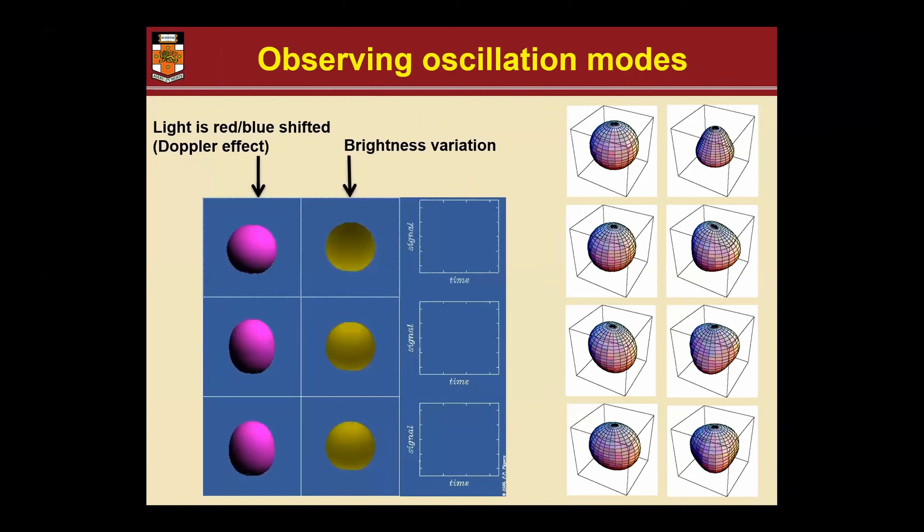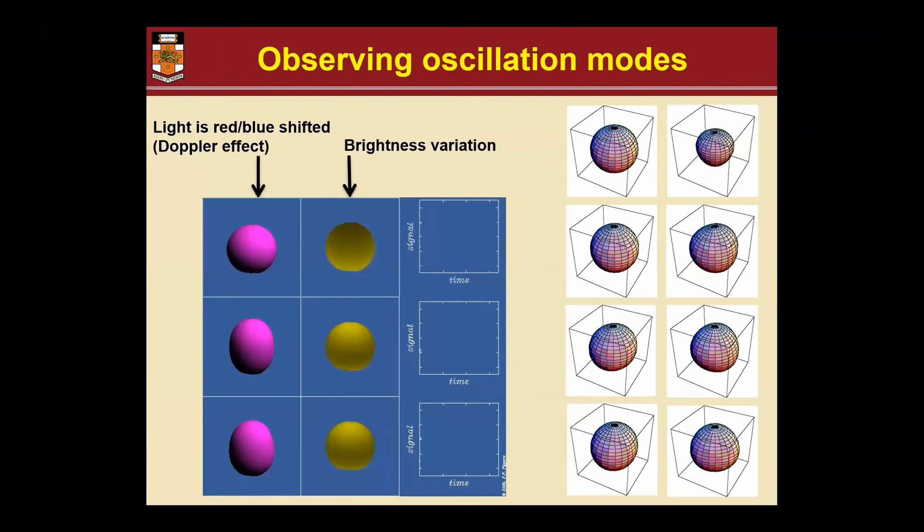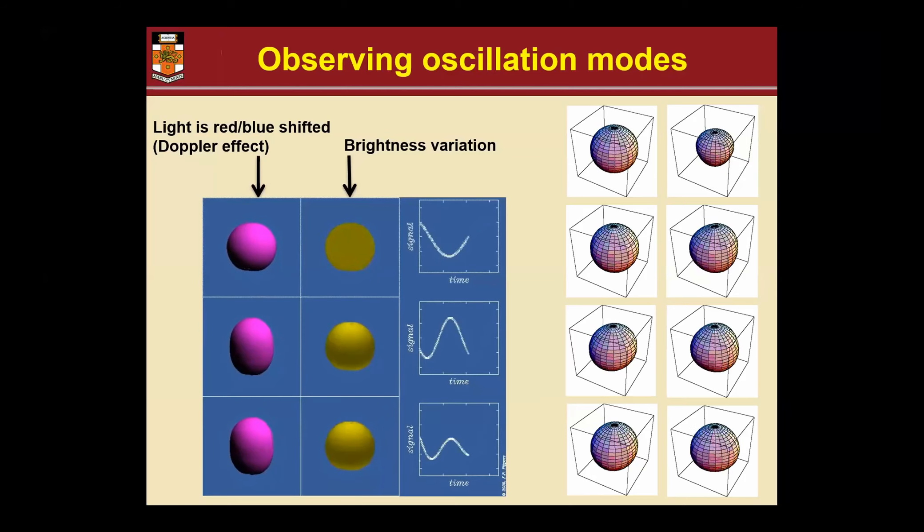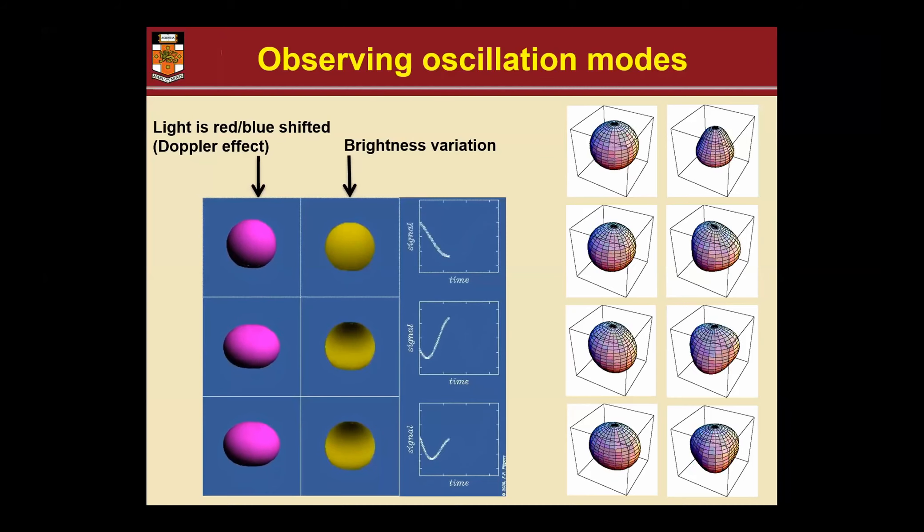The way we measure is either we measure directly the shift or the ringing, the vibration of the surface by radial velocity, or we measure the temperature and therefore luminosity variations associated with that expansion and contraction of the gas.